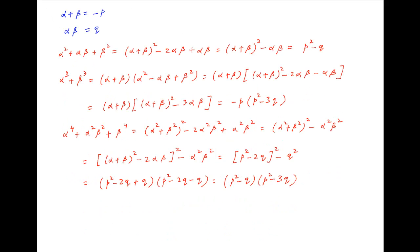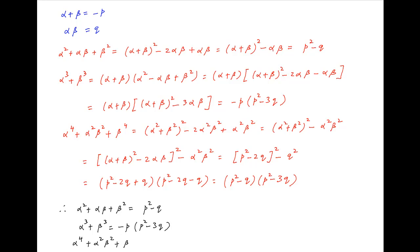Therefore, to summarize: alpha squared plus alpha beta plus beta squared is equal to P squared minus Q; alpha cubed plus beta cubed is equal to minus P times in brackets P squared minus 3Q; and alpha to the power 4 plus alpha squared beta squared plus beta to the power 4 is equal to P squared minus Q times P squared minus 3Q. This is the required answer.